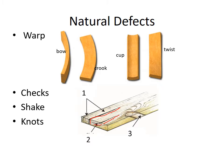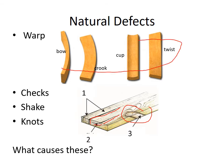Generally these defects happen because of poor drying or too fast of drying — that's as far as the warp and the checks and shake. Knots of course are caused from branches. These warp defects you'll see more as you process lumber.